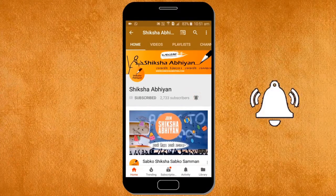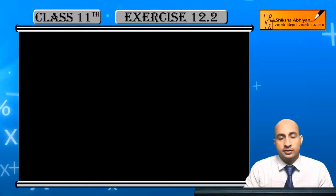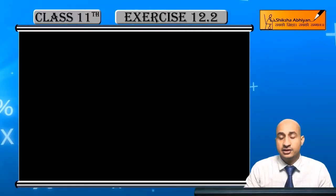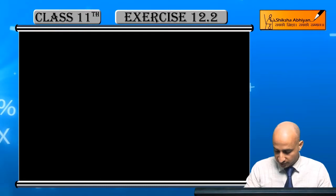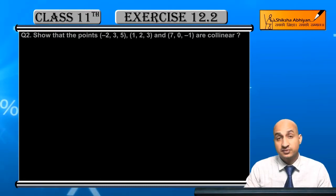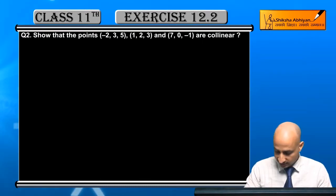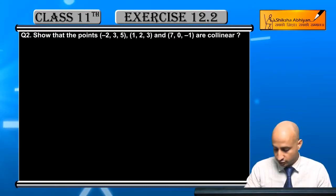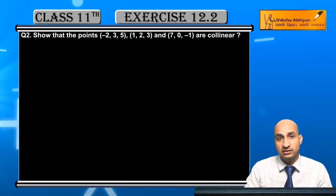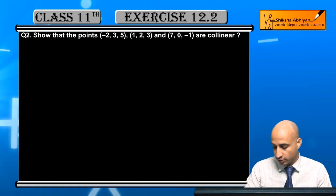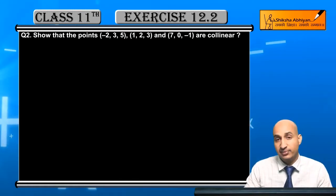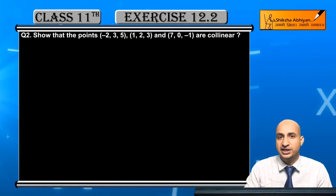Now, second question: we show that the points minus 2 comma 3 comma 5, and 1 comma 2 comma 3, and 7 comma 0 comma minus 2 are collinear.